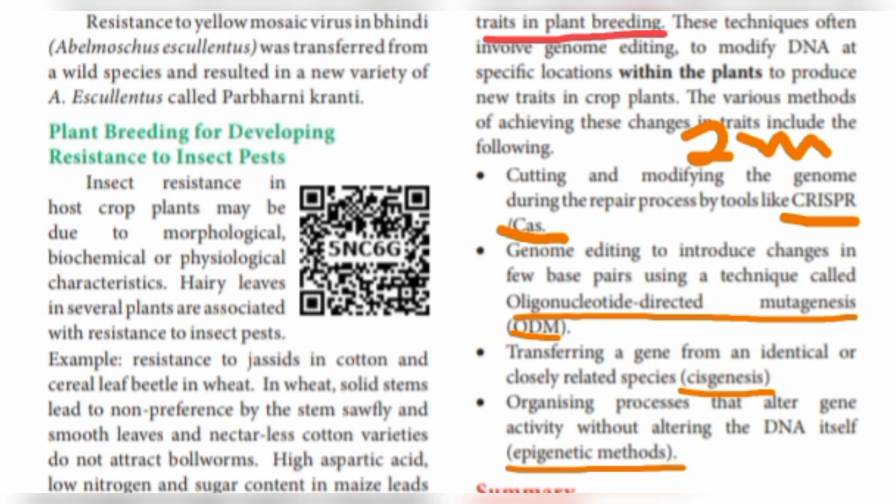The last technique is the epigenetic method. This involves any changes to gene expression without changes to the DNA sequence itself. So in total, we have four techniques: CRISPR or CAS, cisgenesis, oligonucleotide directed mutagenesis, and the epigenetic method.